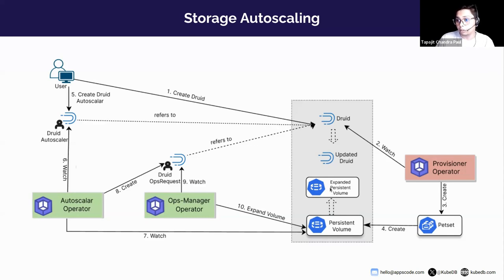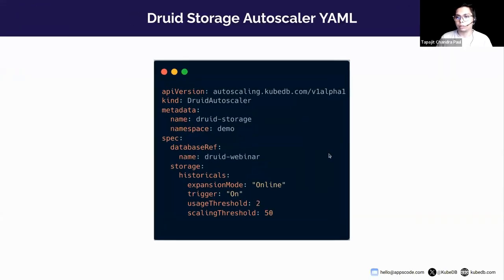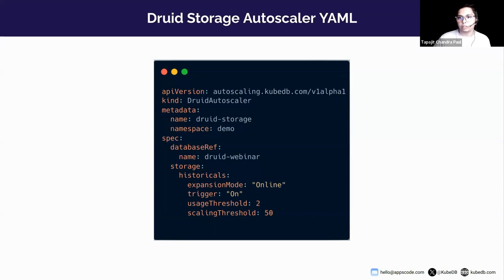As a result, a PVC that had 1 gigabyte of storage will grow to 2 gigabytes or the necessary amount. Important to note: in Druid's architecture, only two data nodes — historical and middle manager — have PVCs. Other nodes don't need any PVCs. So for storage autoscaling, you should only specify historical and middle manager nodes.